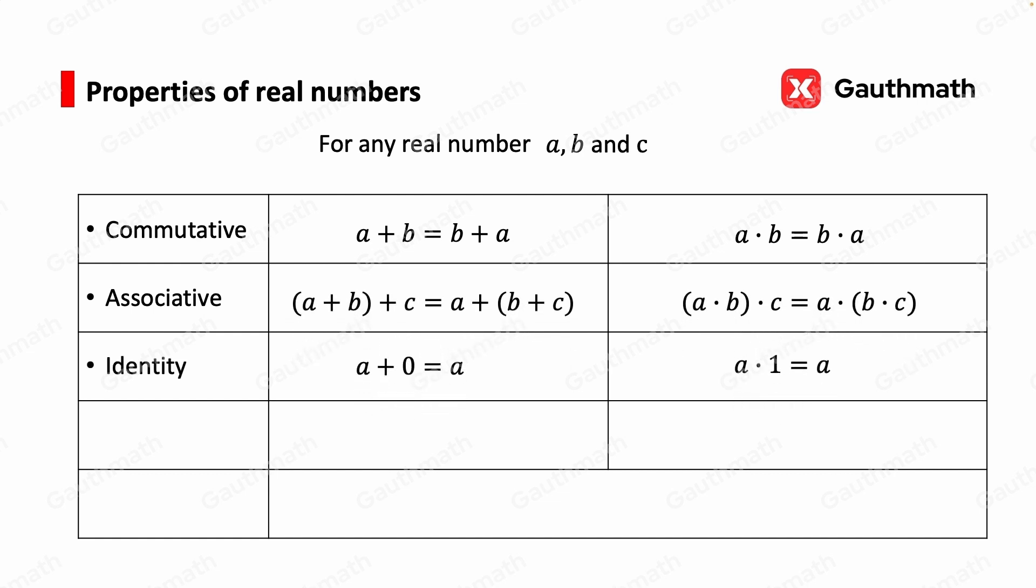Zero is the additive identity and one is the multiplicative identity, respectively.